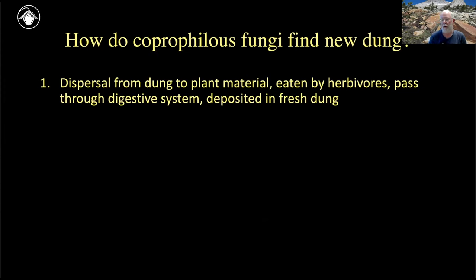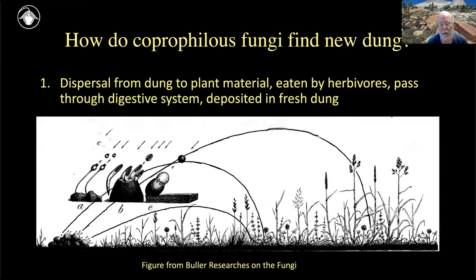Now let's go to a part of the story that is well-known: how do coprophilous fungi find new dung? The answer known since the early 1900s is that dispersal from dung to plant material occurs, then that plant material is eaten by herbivores, passed through their digestive system, and when the dung is deposited it already has the fungi in it. This is how they get there fast. A diagram from Bowler from the 1920s shows multiple fungi targeting their spores toward the light, shooting them to get away from the dung pile, sticking on plant material, and waiting until herbivores eat them.